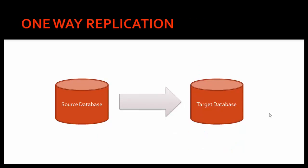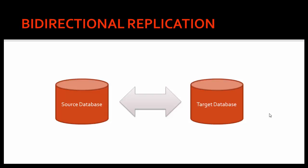In this course we will look at two types of replication topologies: one-way replication and bi-directional replication. Bi-directional is also used for high availability, where the source is replicated to the target and the target is replicated back to the source, keeping both databases exactly the same. If an application is connected to the source and the source goes down, it can connect to the target database instead. When the source comes back up, the target replicates back to the source and both databases are kept in sync.